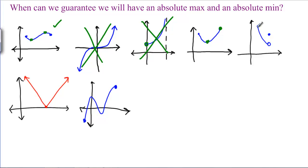This example has an absolute maximum, but there is again no absolute minimum because the lowest point is approaching an open dot. This absolute value example has an absolute minimum, but no absolute maximum because the arms keep going up. This last example does have an absolute minimum at this endpoint and an absolute maximum at this endpoint.